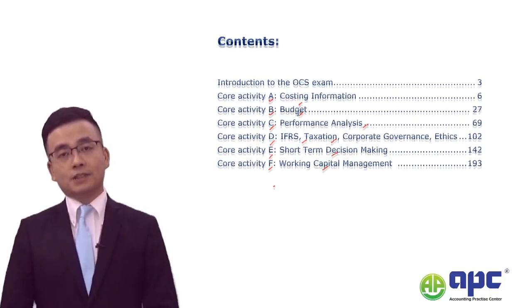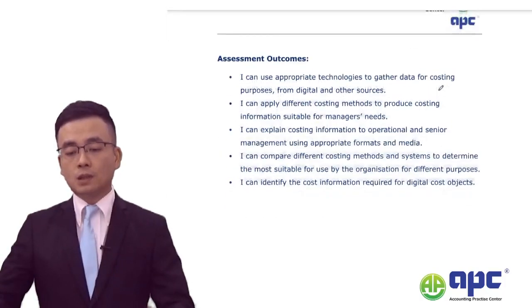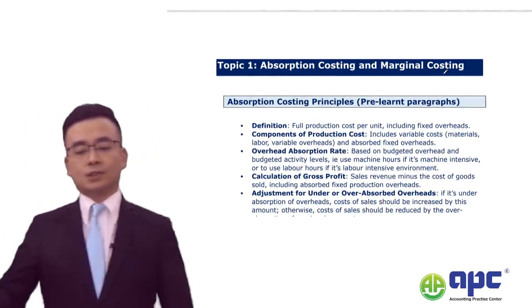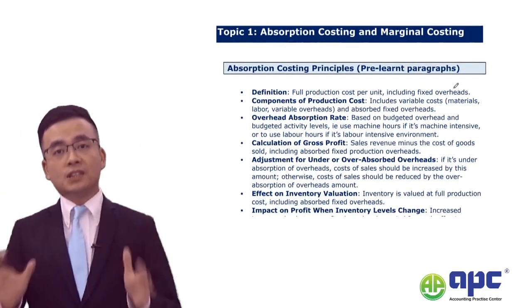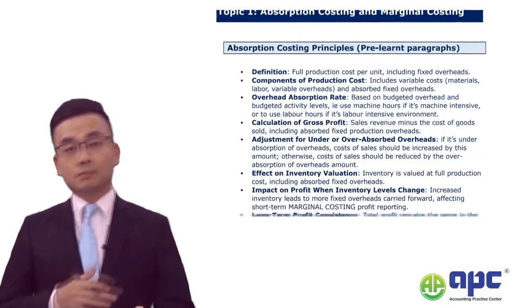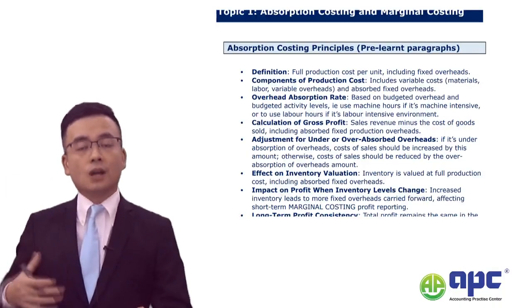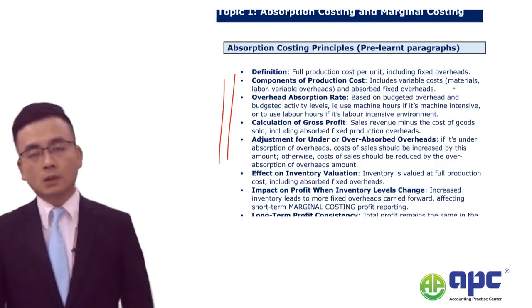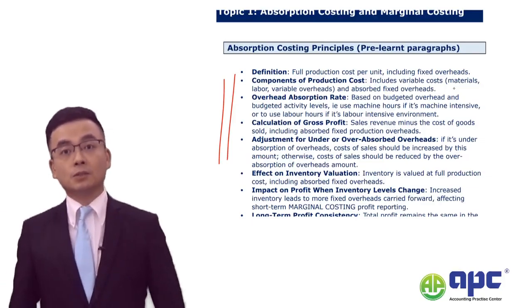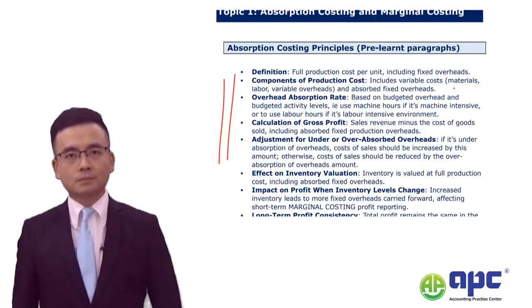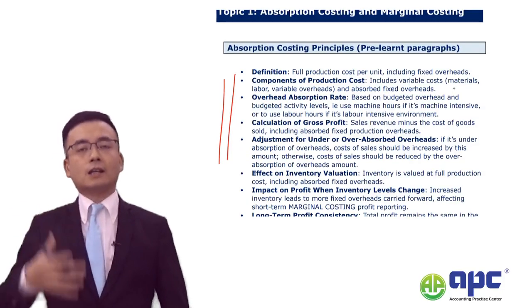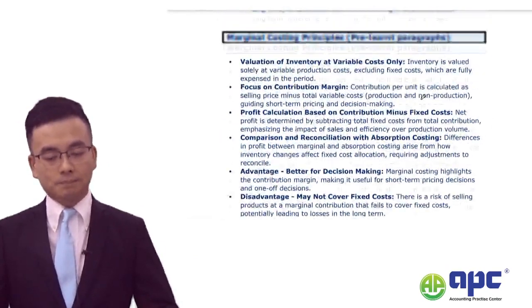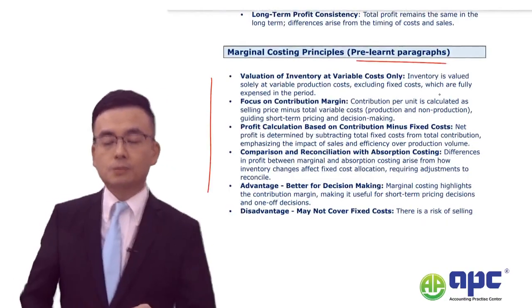For each of the core activities in turn, I will be going through lots of pre-learned paragraphs. For example, topic one is absorption costing and marginal costing. If you see these topics coming up in the exam, it is very likely that the examining team will ask you to explain the differences between absorption and marginal costing. You need to learn what I mean by absorption costing, memorise the paragraphs, and write them directly in the actual exam. It will tell you exactly how many points you need to write, keeping each point absolutely short and straightforward.